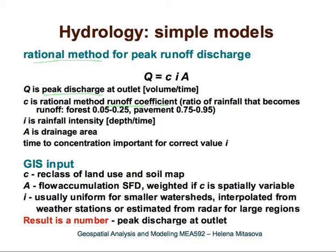For forest, as you can imagine, this number is very low. For pavement, the coefficient is close to one — almost all water that falls on pavement becomes runoff. Then we have rainfall intensity, and then drainage area.